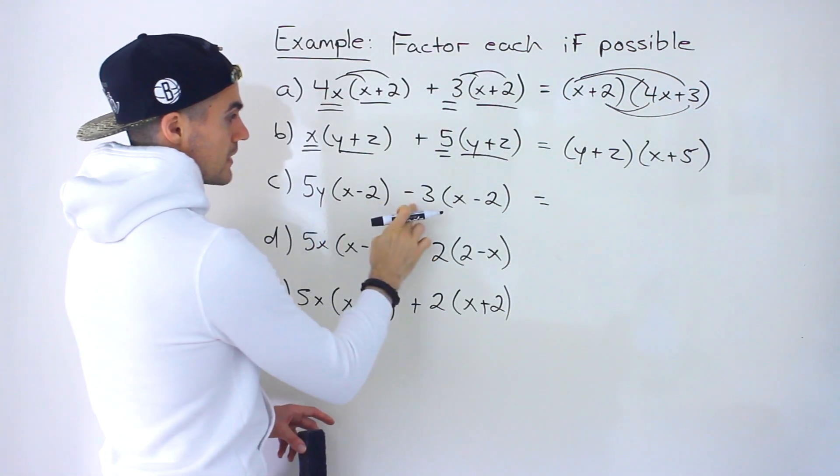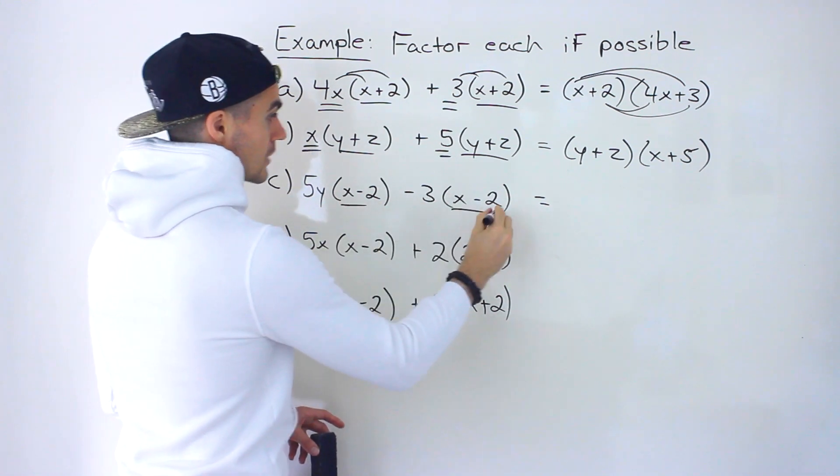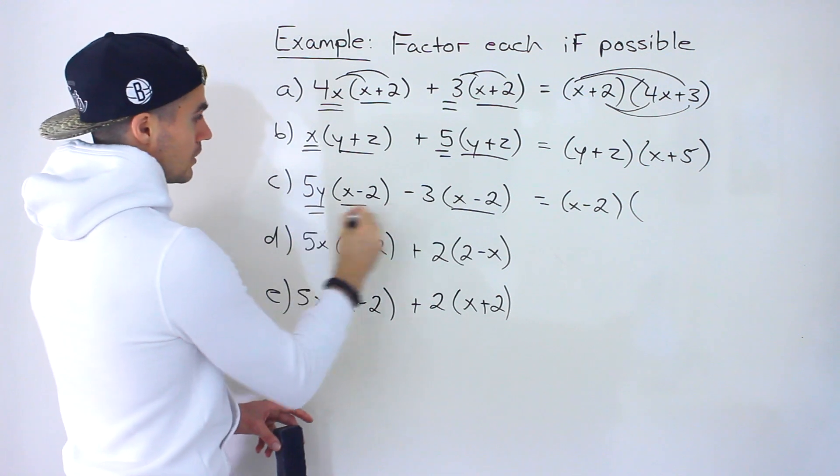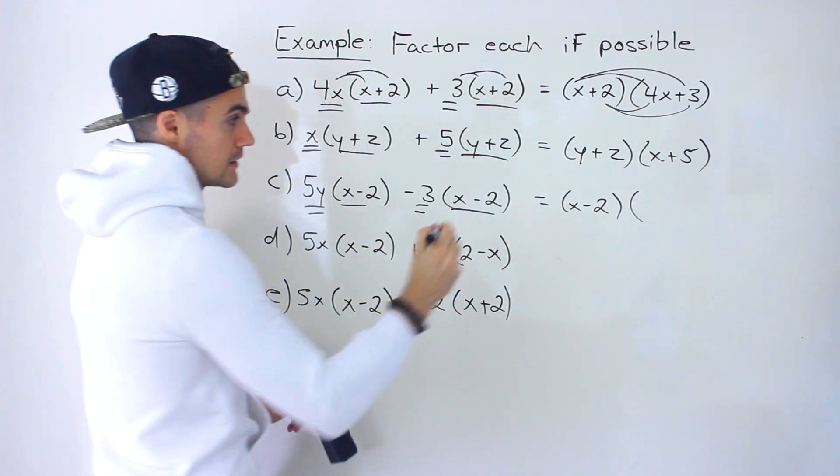Moving on to the next one, notice 5y times x minus 2 minus 3 times x minus 2. We could take out the x minus 2. Same pattern. We're left with 5y minus 3.